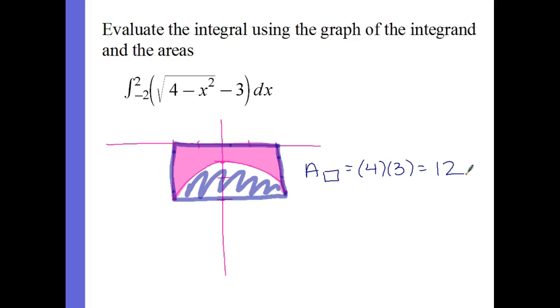Then the area of the circle is only half of it. So we have the area of a semicircle, which is half pi r squared. We said it was a radius of 2, so the area of the circle region would be 2 pi. So I want to take the rectangle minus the circle, so it would be 12 minus 2 pi.